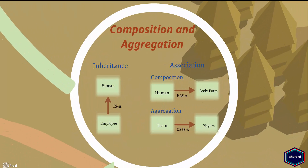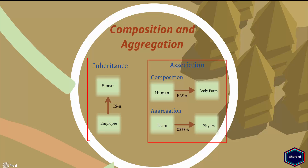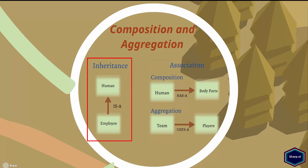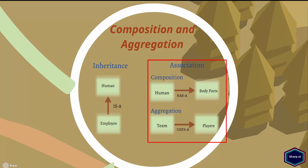Now let's move to composition and aggregation. Composition and aggregation are specialized forms of association, whereas association is a basic relationship between two classes without any rules. Association is very similar to inheritance and both allow programmers to reuse the code. The only difference is that inheritance extends a class and we can add custom attributes and behavior, while association uses an instance of a class. When we talk about inheritance, we have a so-called is-a relationship — for example, an employee which is a human, or a car which is a vehicle. Whereas when we talk about association, we have a has-a relationship.